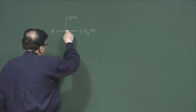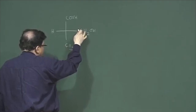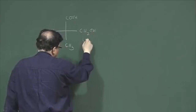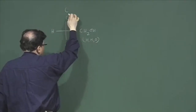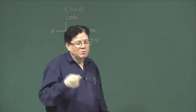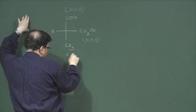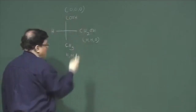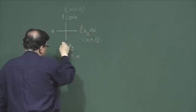When trying to solve this problem, the first thing you need to do is assign the priority sequence of the groups. The first atom is carbon, this is also carbon — no distinction yet. But this carbon is attached to only one oxygen, while the CO₂H carbon has a C double bond O, so it effectively has three oxygens attached. The methyl has three hydrogens, and that group is only hydrogen. So assigning priority becomes easier: this is number one, this is number two, this is number three, and this is number four.